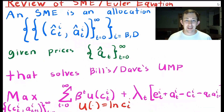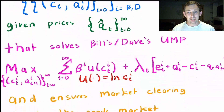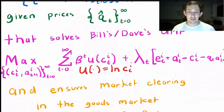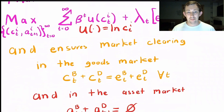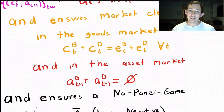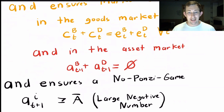Remember that a sequential market equilibrium is an allocation with consumption and assets from t equals zero to infinity for everyone, given the prices q_t. It solves everyone's utility maximization problem, and it ensures that we have market clearing in the goods market in every period — so the consumption of the two people equals the total endowment in the economy.